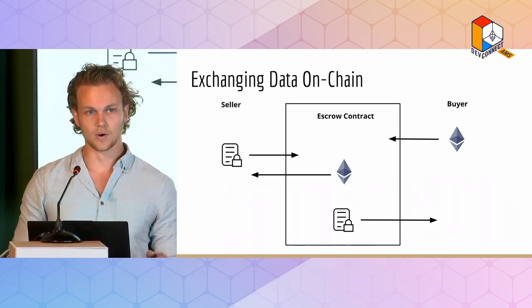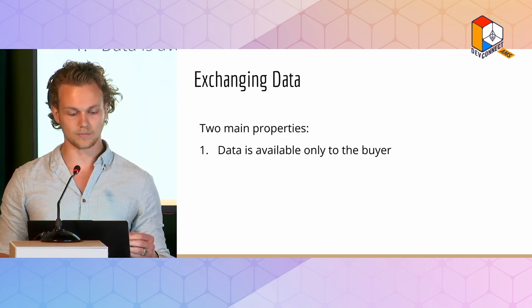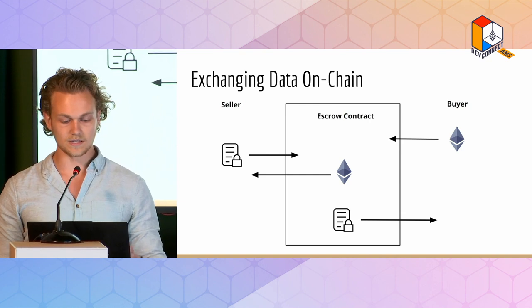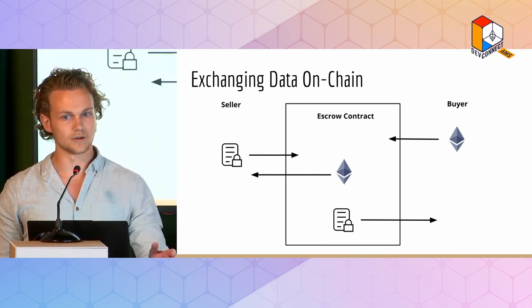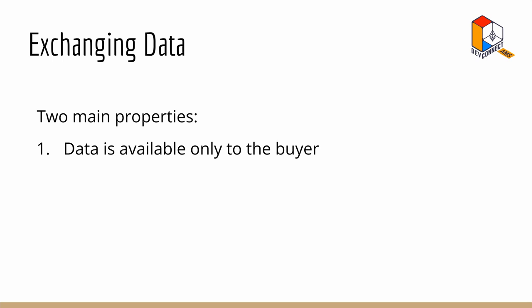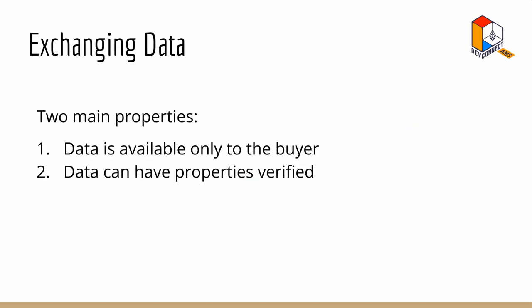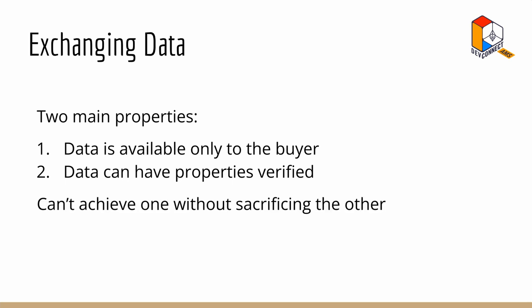In order to do full private data exchange, we need two other properties. First, we want the data to be only available to the buyer — in the basic escrow case the data is just put on chain, meaning it's public to anyone. Second, this data needs to have properties verified about it. In the escrow example, the only condition to retrieve tokens is that some data was passed in; we'd like to verify some content or property about it so the buyer is actually getting what they believe they're getting. We'll show that we can't achieve one of these without sacrificing the other using naive techniques.